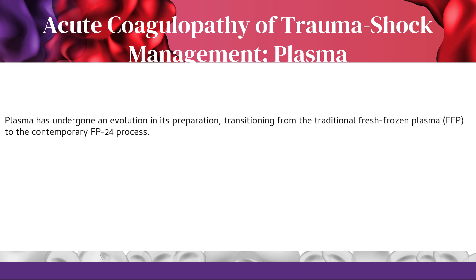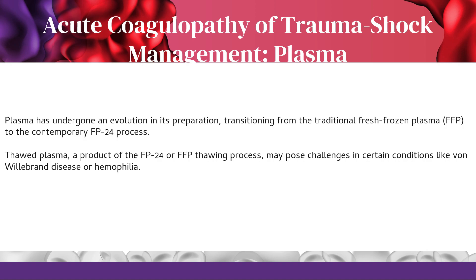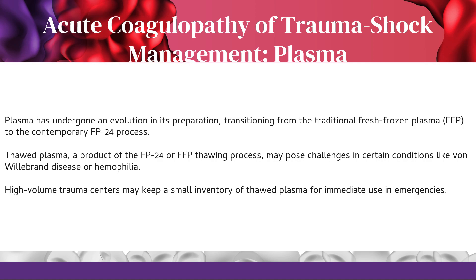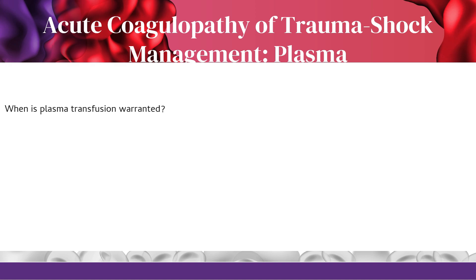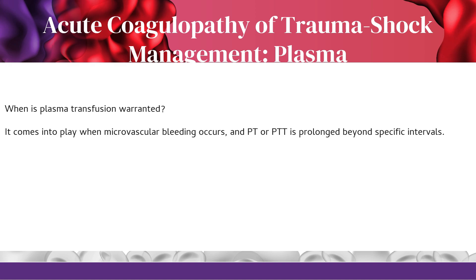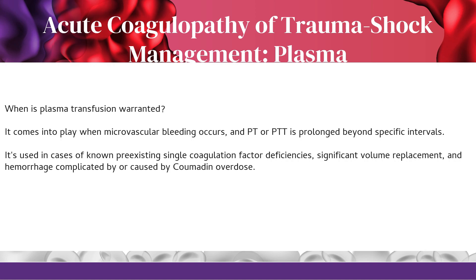Plasma is a key player in managing acute coagulopathy of trauma shock. It has evolved from traditional fresh-frozen plasma (FFP) to the contemporary FP-24 process. Thawed plasma may pose challenges in conditions like von Willebrand disease or hemophilia. High-volume trauma centers may keep a small inventory of thawed plasma for immediate use. Plasma transfusion is warranted when microvascular bleeding occurs and PT or PTT is prolonged, or in cases of known pre-existing single coagulation factor deficiencies, significant volume replacement, or hemorrhage complicated by Coumadin overdose.